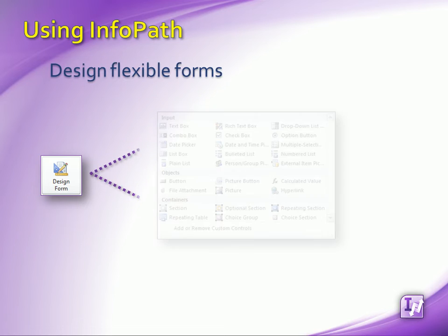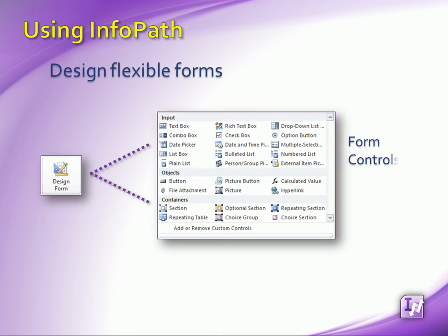Along with standard form controls like text and list boxes, we can insert controls that let users add, remove, replace or hide sections of a form — things like repeating tables, choice groups, and optional sections that let us design a truly flexible form template.